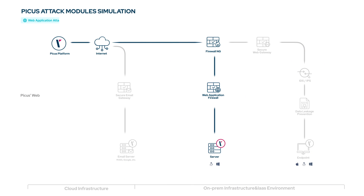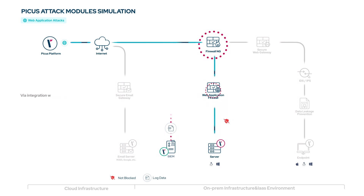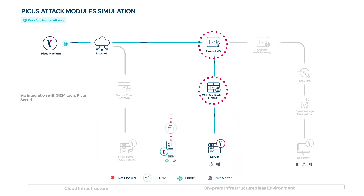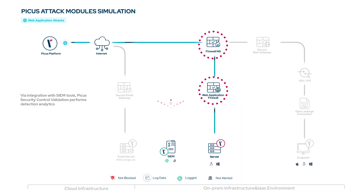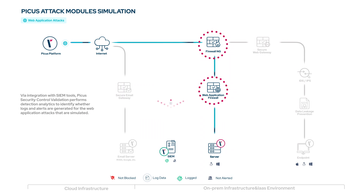The PICAS Web Application Attack module validates that malicious web application requests are prevented and detected by network and detection controls. Via integration with SIEM tools, PICAS security control validation performs detection analytics to identify whether logs and alerts are generated for the web application attacks that are simulated.